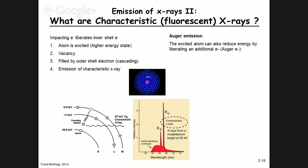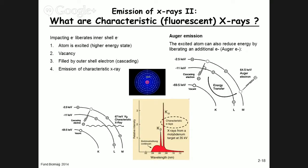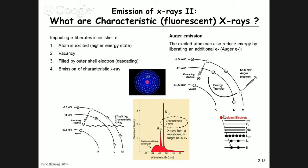There is also Auger electron emission. Instead of an electron cascading down and emitting an x-ray photon, the excited atom can transfer the energy within the electron shells to another outer electron, which is then liberated. In this process — starting with the vacancy from the incident electron, the cascading electron's energy is transferred to an outer shell electron — that outer electron is emitted as a so-called Auger electron, in this example with 64.5 kilo electron volts of energy.